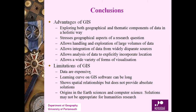Limitations of GIS include: data can be quite expensive; the learning curve on GIS software can be long, though modern software is now very self-explanatory. GIS shows spatial relationships but does not provide absolute solutions. Its origins in earth sciences and computer science mean solutions may not always be appropriate for humanities research — though with experience and good understanding of geography, this limitation can be overcome.